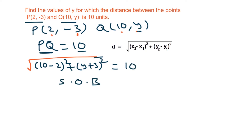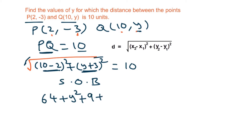Squaring both sides removes the square root. 10 minus 2 is 8, and 8 squared is 64. We expand (y plus 3) whole square using (a plus b) whole square: y squared plus 3 squared (which is 9) plus 2 times y times 3 (which is 6y). This equals 10 squared, which is 100.